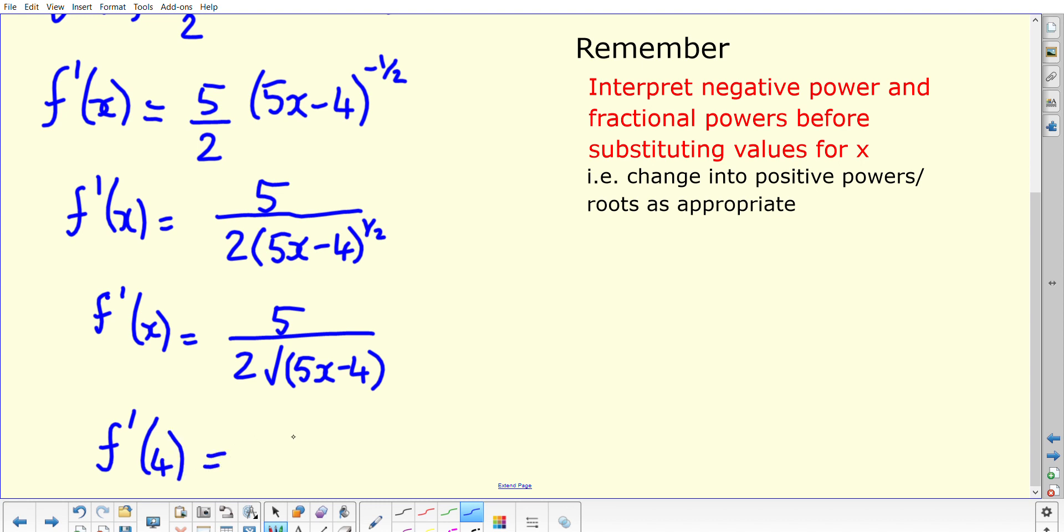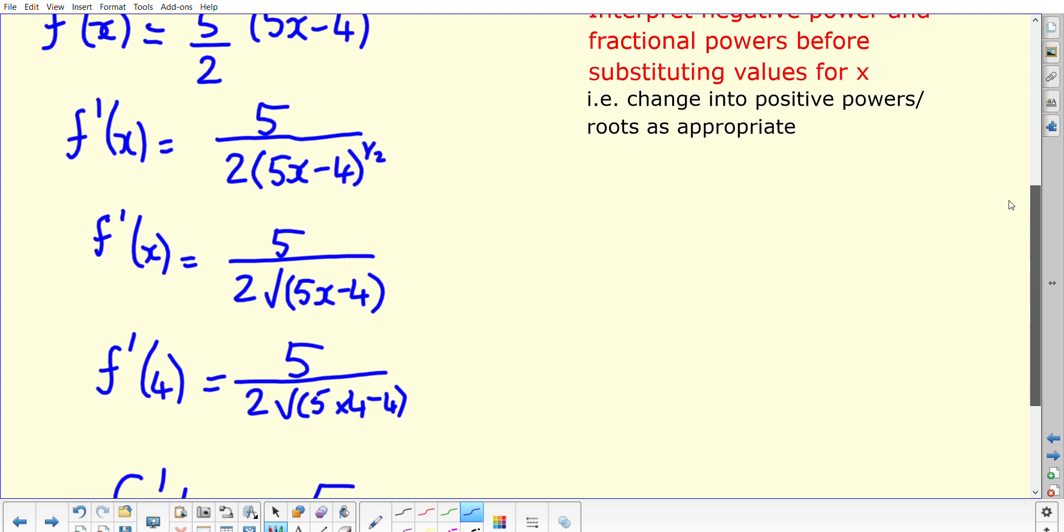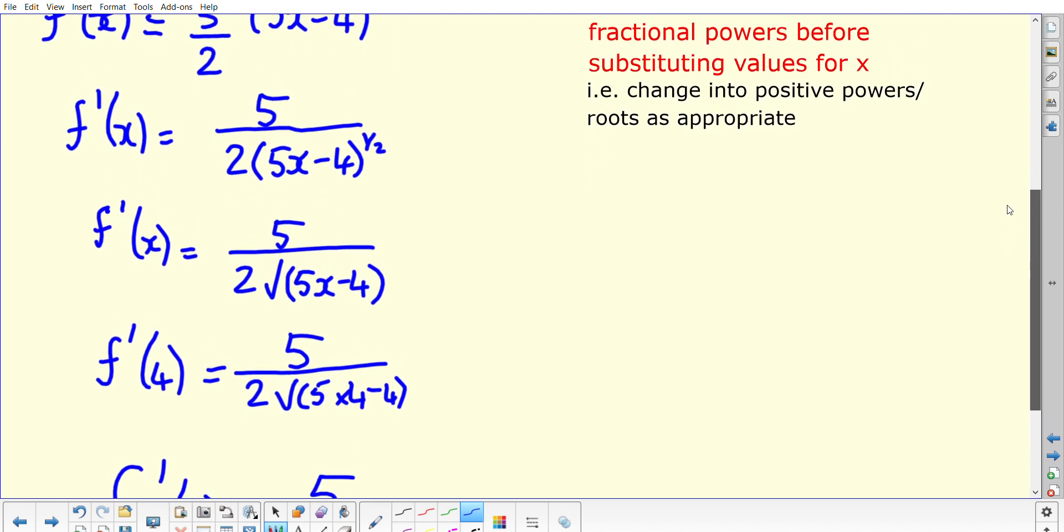Now working out f dash of 4, it should be straightforward: 5 over 2 times the square root of 5 times 4 minus 4. That's going to give us on the bottom 2 times the square root of 5 times 4 is 20, minus 4 is the square root of 16, which of course is 4. We end up with a value of f dashed 4 as 5 over 2 times 4, which is 5/8. You don't get into complications of trying to work out 16 to the power of negative a half or anything at that point - you should have done this process of interpreting.